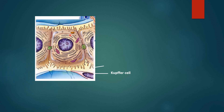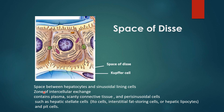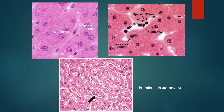The perisinusoidal space or space of Disse is the zone of intracellular exchange, containing plasma, scanty connective tissue, and perisinusoidal cells. The hepatic stellate cell, also called the Ito cell or interstitial fat-storing cell, hepatic liposite, and pit cell, is present in the space of Disse. In a liver biopsy, the enlarged perisinusoidal space can be appreciated along with Kupffer cells in the space of Disse. Binucleated hepatocytes may also be seen.